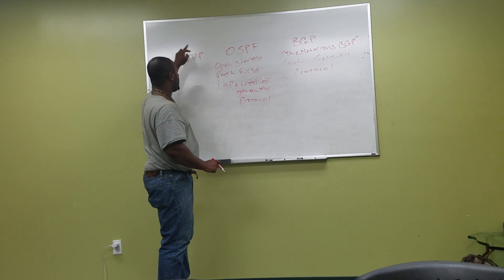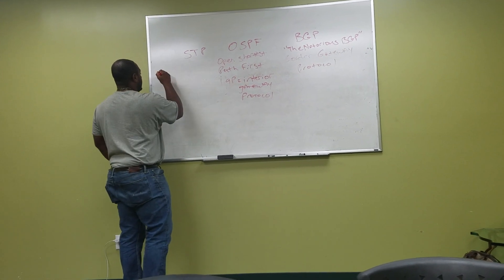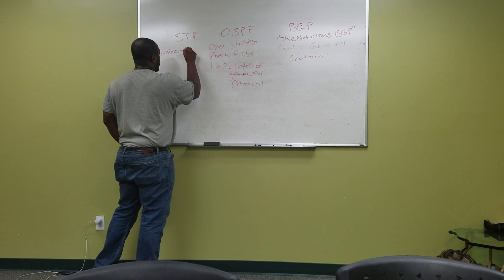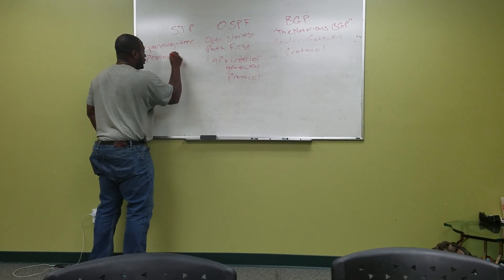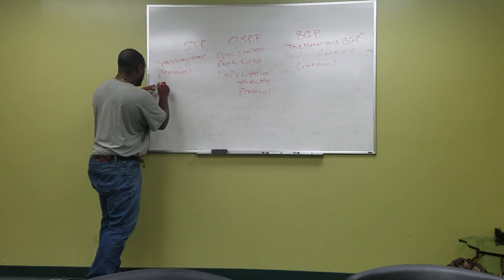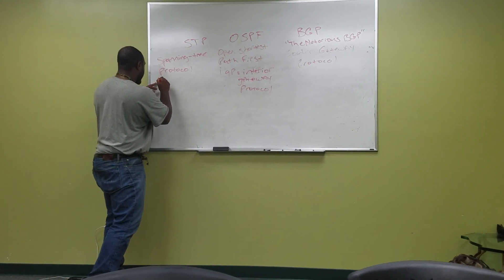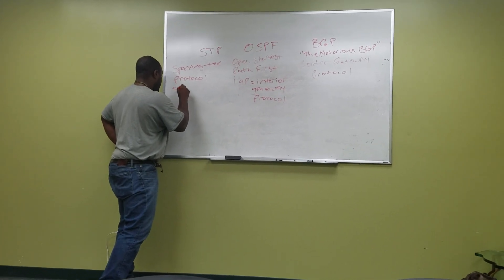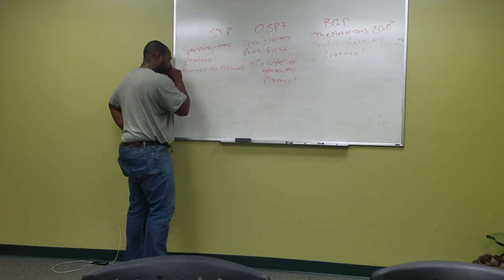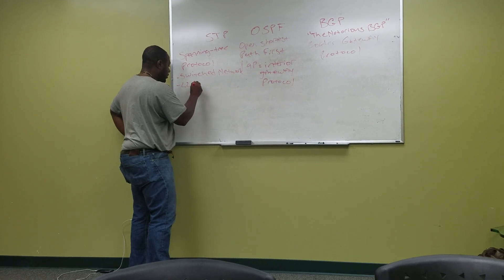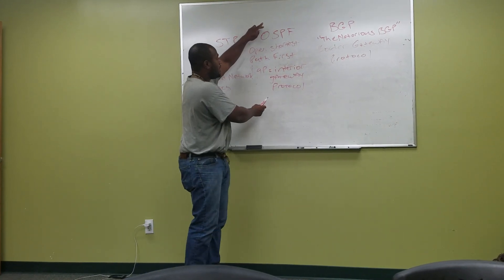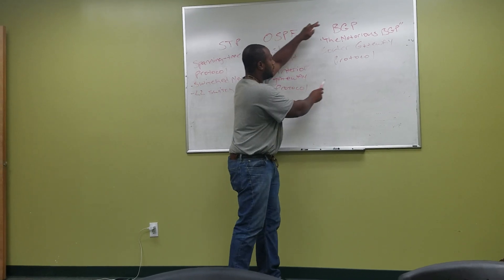This protocol sits on top of STP, which stands for Spanning Tree Protocol. Spanning Tree Protocol is a protocol for a switch network — a Layer 2 LAN environment. It's for a switch network, and it's a Layer 2 switch. This has to be stable in order for OSPF to work, and OSPF has to be stable in order for BGP to work.